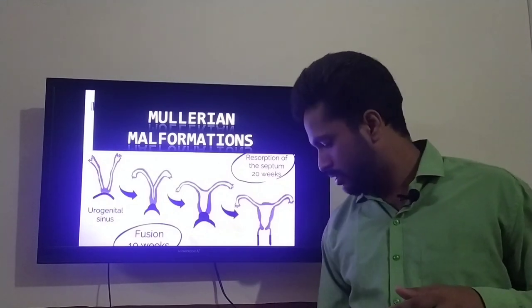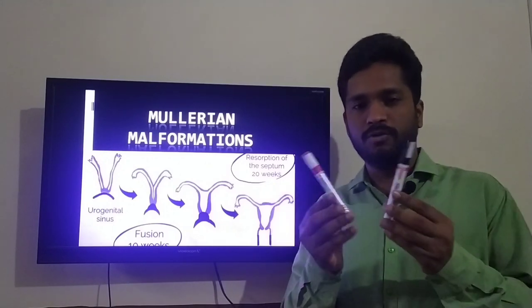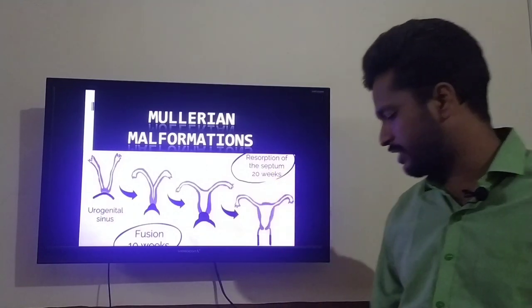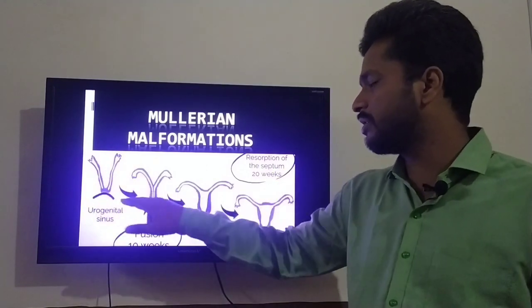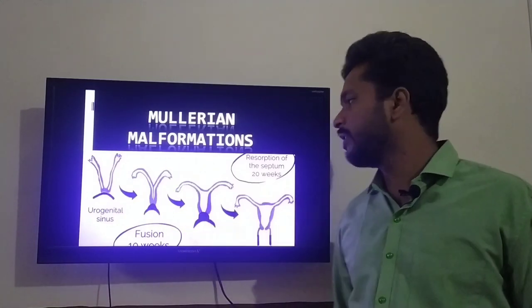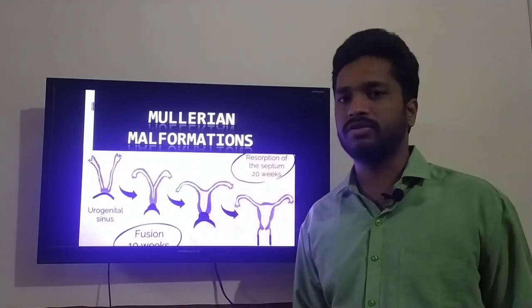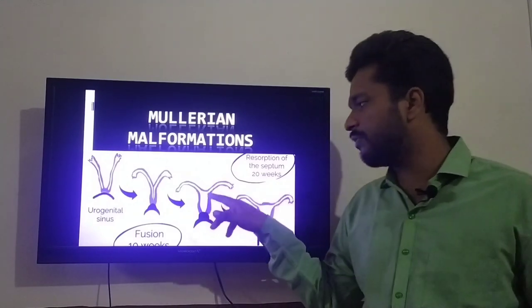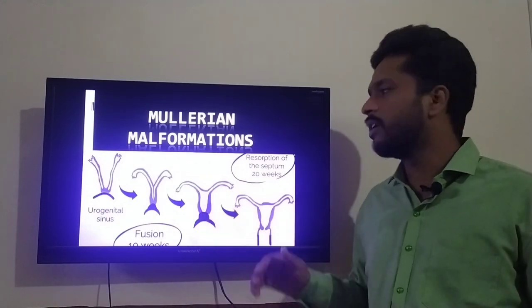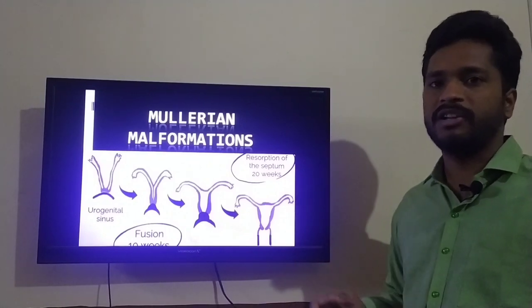These are the two Mullerian ducts — right and left. They fuse together and form the internal organs. They fuse together at around 10 weeks of intrauterine life, and during development there is a septum which resolves after 20 weeks of intrauterine life.